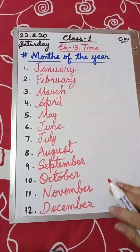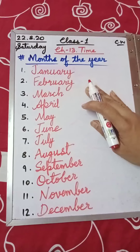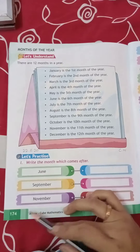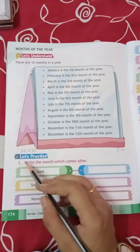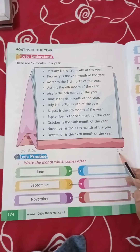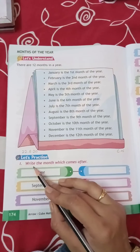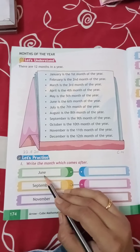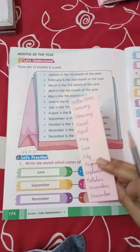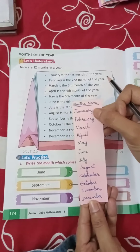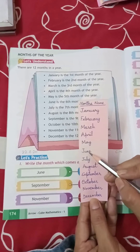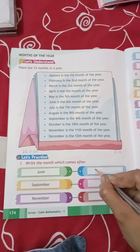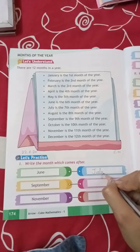Let us practice them in your book, page number 174. Put today's date and write 'Class Work'. Number 1: write the month which comes after. Which month comes after June? Using the chart I've written with month names from January to December, we find June — after June comes July. J-U-L-Y, July.